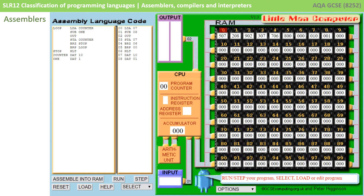We can also see that we've lost our variables. On the original program on the left we had a variable called counter and a variable called 1, and these have been replaced with memory addresses. This is what an assembler does when it translates assembly — it converts the labels into machine addresses in memory and translates the assembly language directly into machine code.